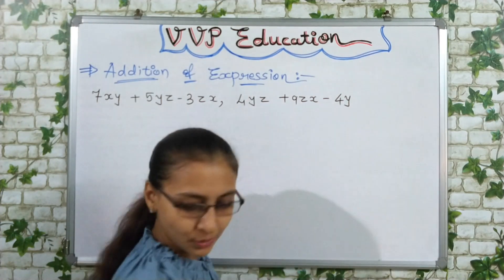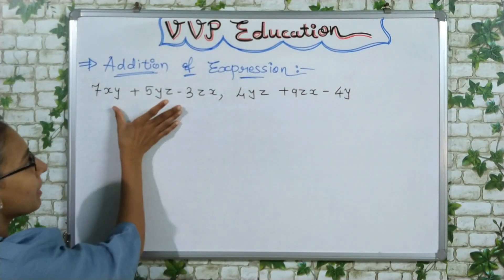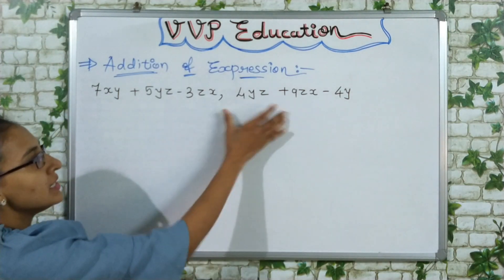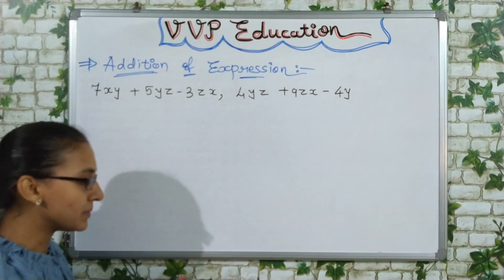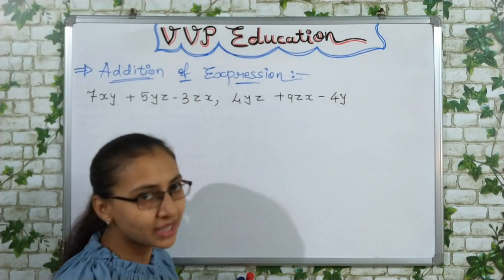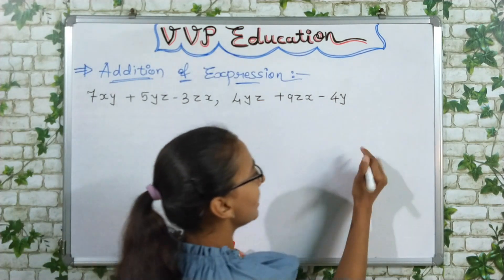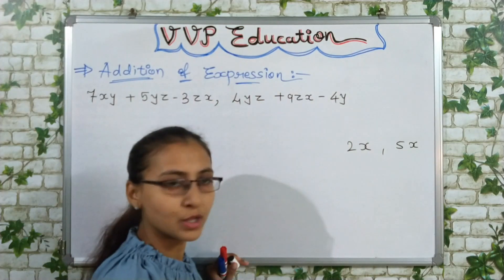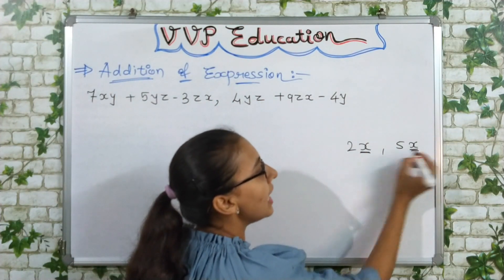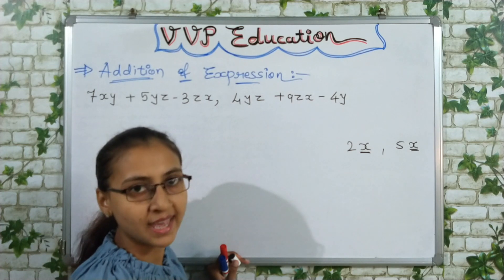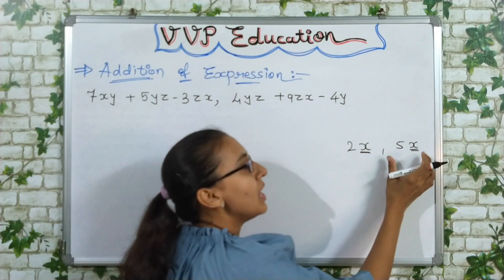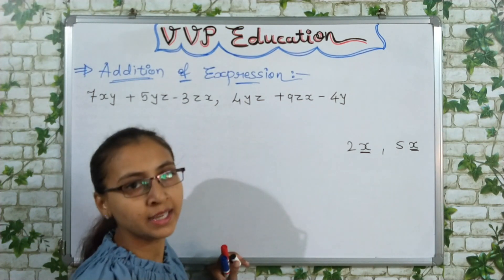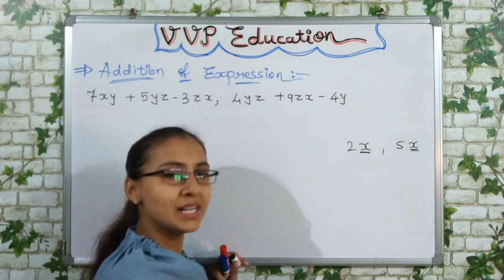So here also we need to do something similar. You have two expressions and you need to add them. First you need to know about like and unlike terms. Suppose I have 2x and 5x — here x is the algebraic factor with 2, and x is the algebraic factor with 5. So these are two like terms. Always remember that only like terms can be added together.